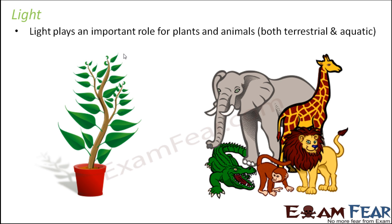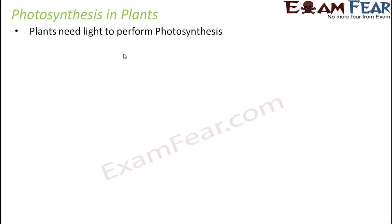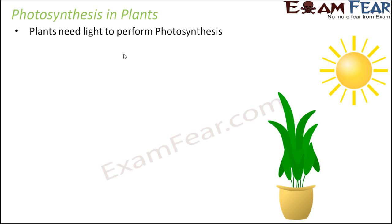Light plays an important role for plants as well as animals, both terrestrial as well as aquatic. A lot of people think that aquatic organisms do not receive direct light, so light is not important for them — but we will see how light is important for all types of organisms. Plants need light to perform photosynthesis; 'photo' means light and 'synthesis' means to prepare, so plants prepare their own food in presence of light.